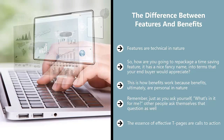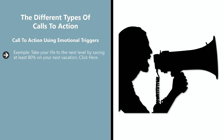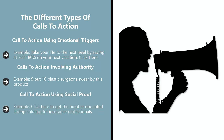The essence of effective T pages is calls to action. When crafting a CTA, emotionally tie the reader to the benefit they will get by buying. There are different types: emotional trigger CTAs (e.g., 'Take your life to the next level by saving at least 80% on your next vacation — click here'), authority-based CTAs (e.g., 'Nine out of ten plastic surgeons swear by this product'), and social proof CTAs (e.g., 'Click here to get the number one rated laptop solution for insurance professionals'). The key is to get away from just saying 'click here' or 'order now' — that wastes momentum. Instead, amplify the sense of need and plug into emotional urgency.